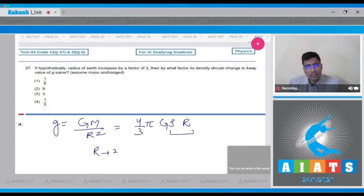Therefore, if r is increased by a factor of 3, rho should be changed by a factor of 1 by 3. And therefore for this question, the correct answer is option 4.